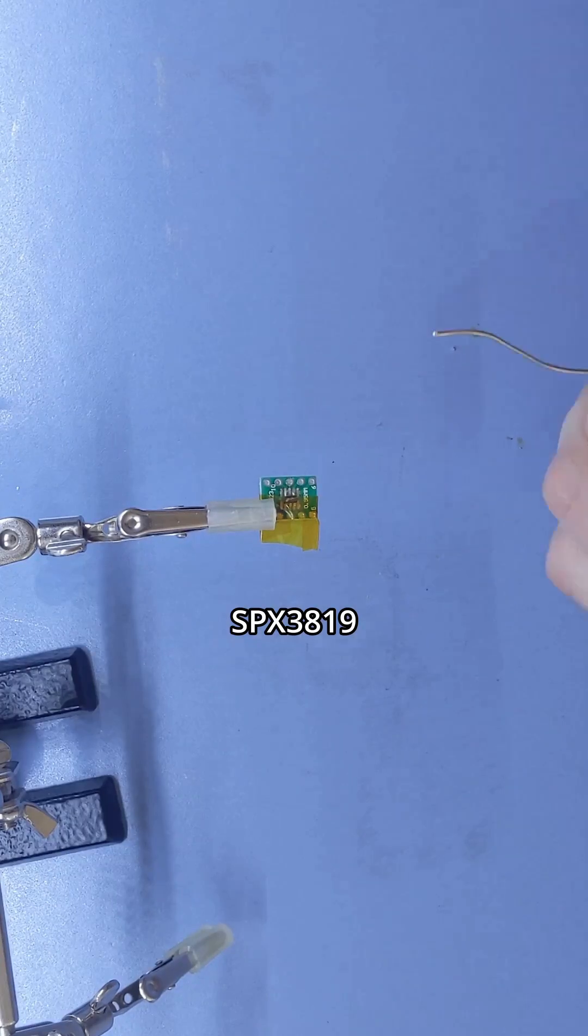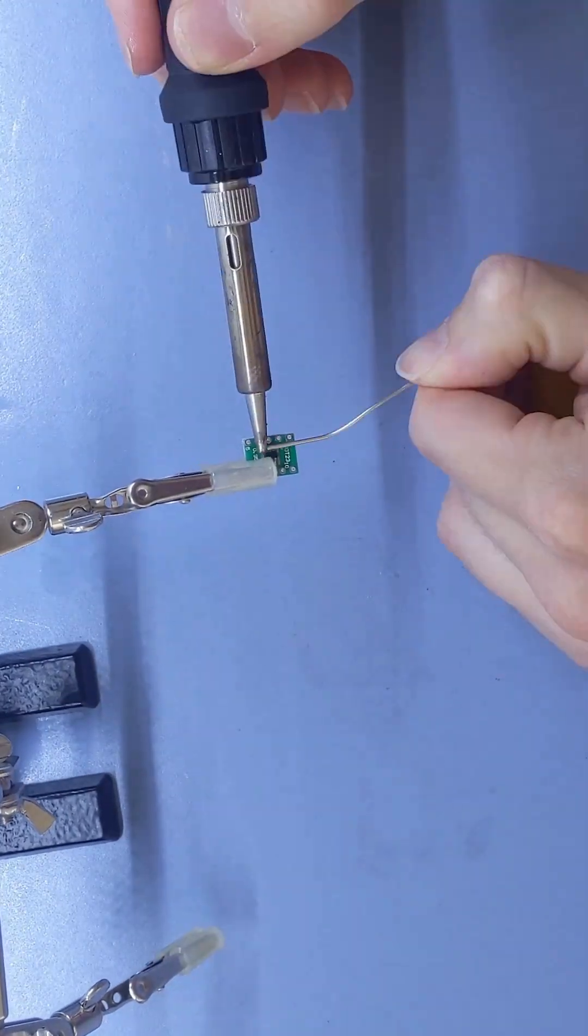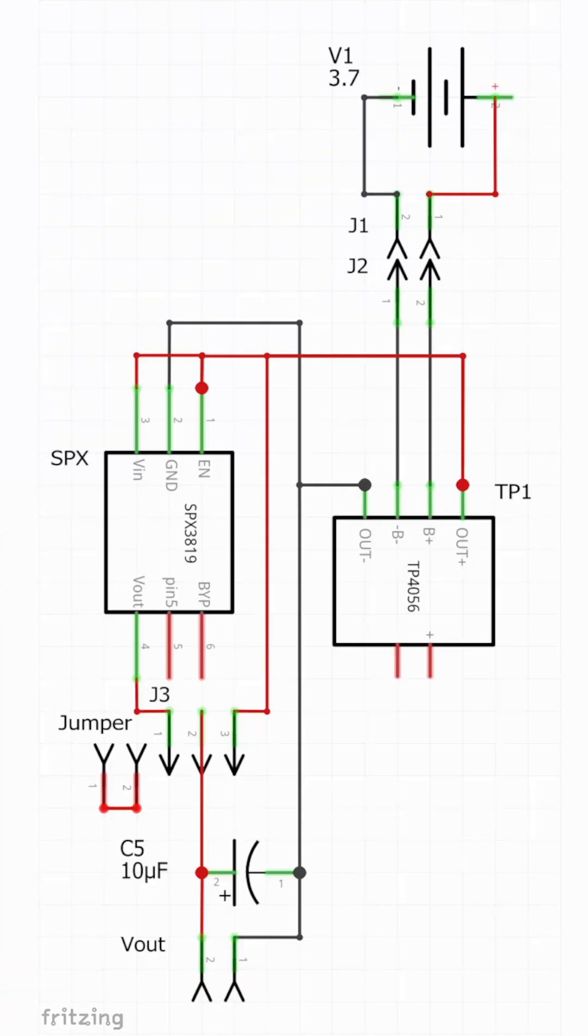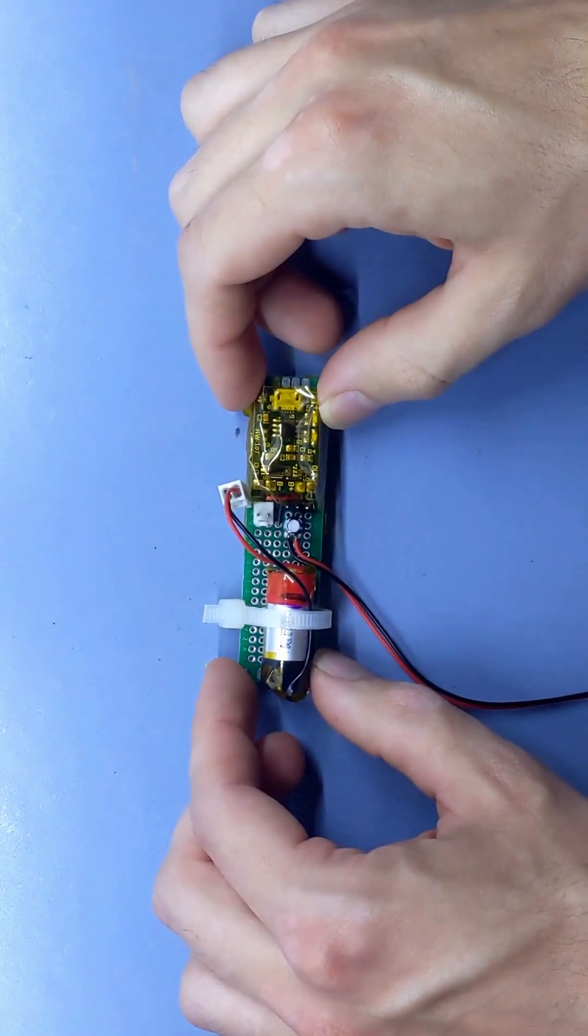A SPX3819 turns the variable cell voltage into a constant 3.3V. Now we combine all of this onto our perfboard. Et voila, it's ready!